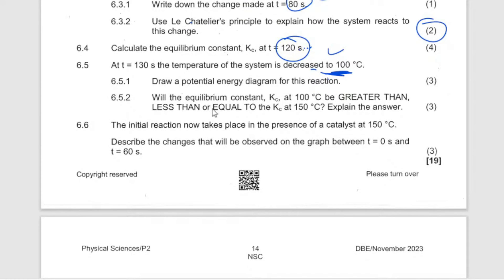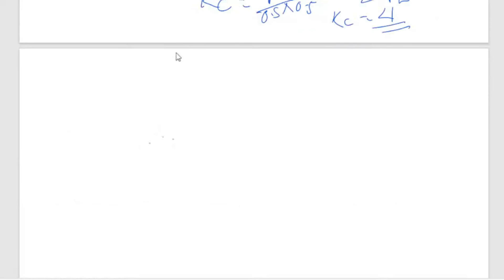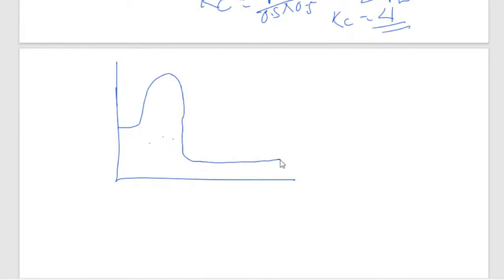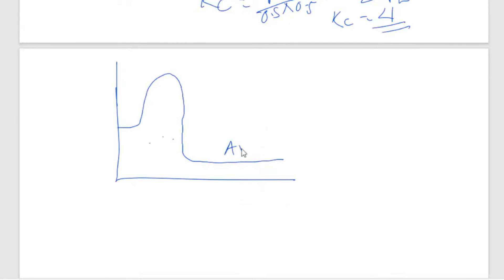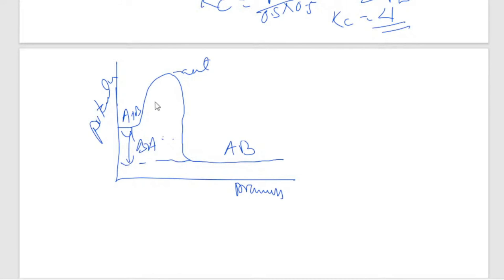Write down the potential energy diagram for this reaction. Since it is exothermic, the energy is lost. The x-axis is reaction progress and the y-axis is potential energy. Reactants are A + B at a higher energy level. There is an activation energy peak, then products AB at a lower energy level. The diagram also shows the activation energy for the reverse reaction and the change in enthalpy — confirming it is exothermic.